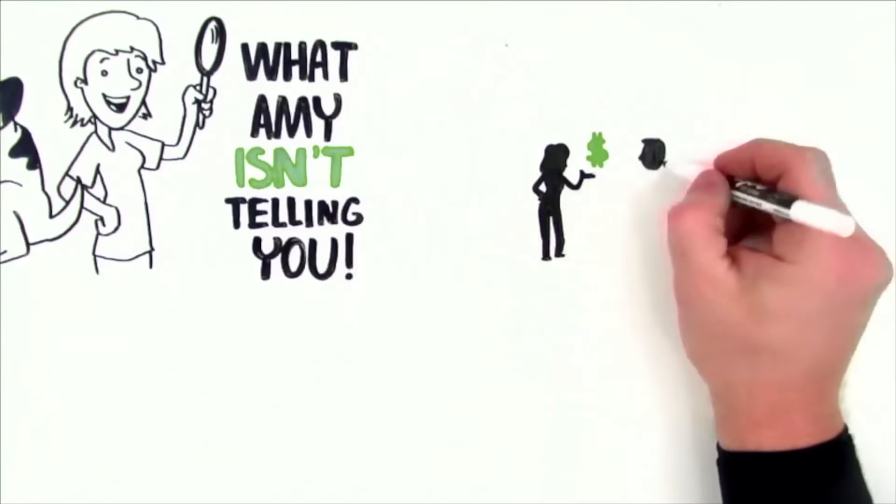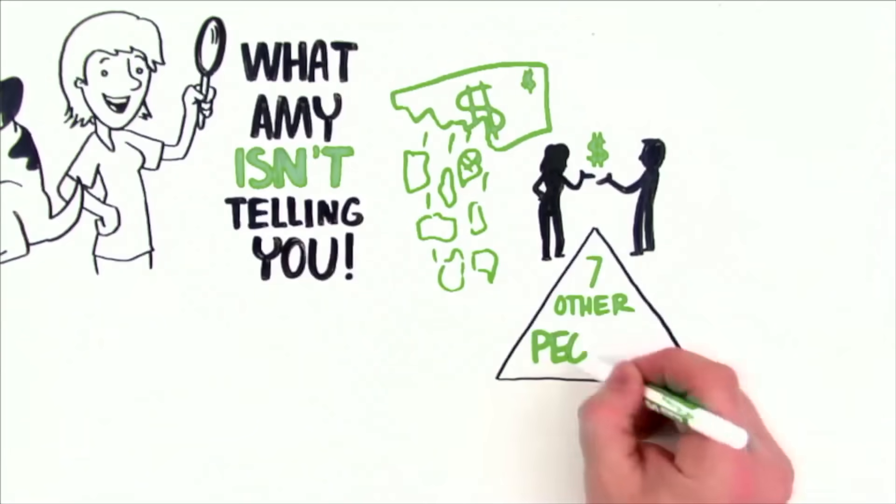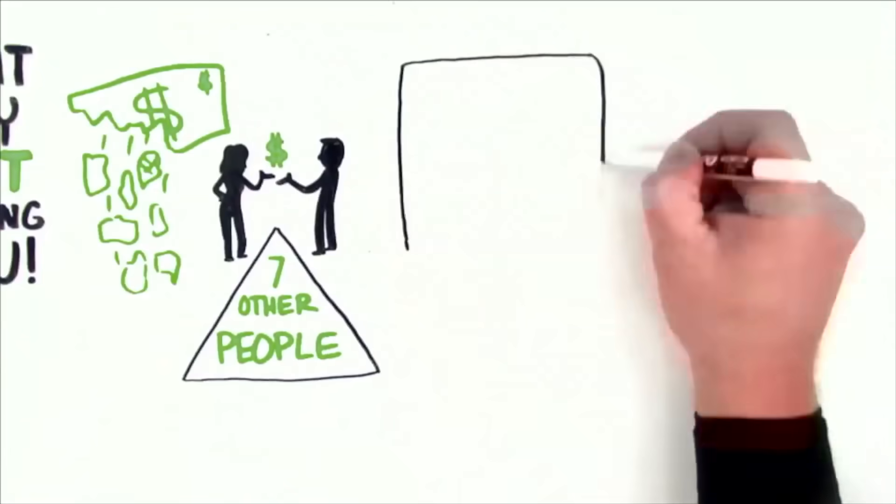Every time Amy sells a unit to one of her friends, she'll receive a nice commission along with seven other people down the line. Aha, now it's becoming clearer.